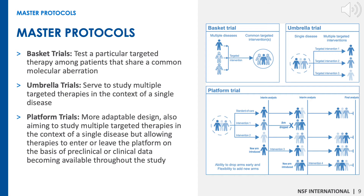In a basket trial, one targeted therapy is tested on more than one disease or subtype of disease. In an umbrella trial, multiple targeted therapies are studied in the context of a single disease. In a platform trial, multiple treatments are evaluated simultaneously within a single protocol. With the inclusion of an adaptive design, it offers flexible features such as dropping a treatment arm for futility, declaring one or more treatments superior, or adding new treatment arms during the course of a trial.